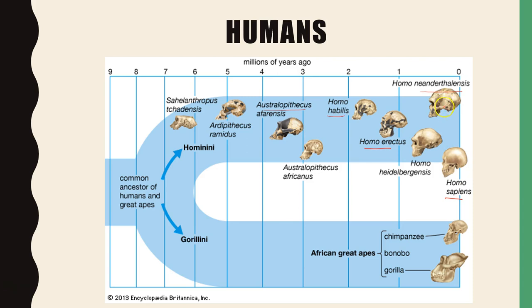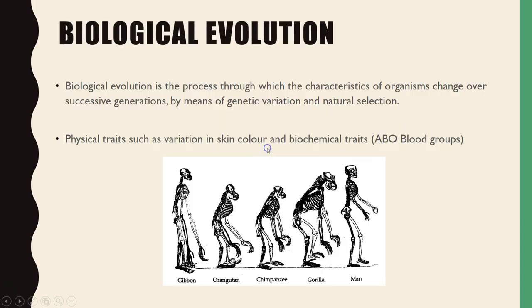Before Homo sapiens, Homo neanderthals existed and they no longer exist anymore. Before that it was Heidelbergensis and Homo erectus. And then we have Homo habilis as the earliest form of the genus Homo, and then Australopithecus before that.